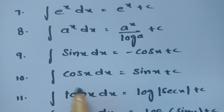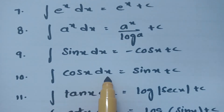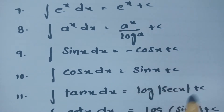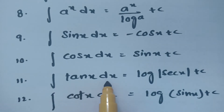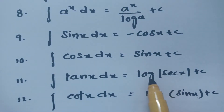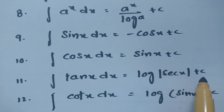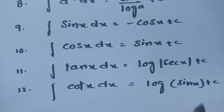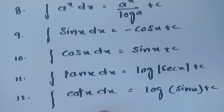Integral of cos x dx is nothing but sin x plus c. Integral of tan x dx is nothing but log(sec x) plus c. Integral of cot x dx is equal to log(sin x) plus c.